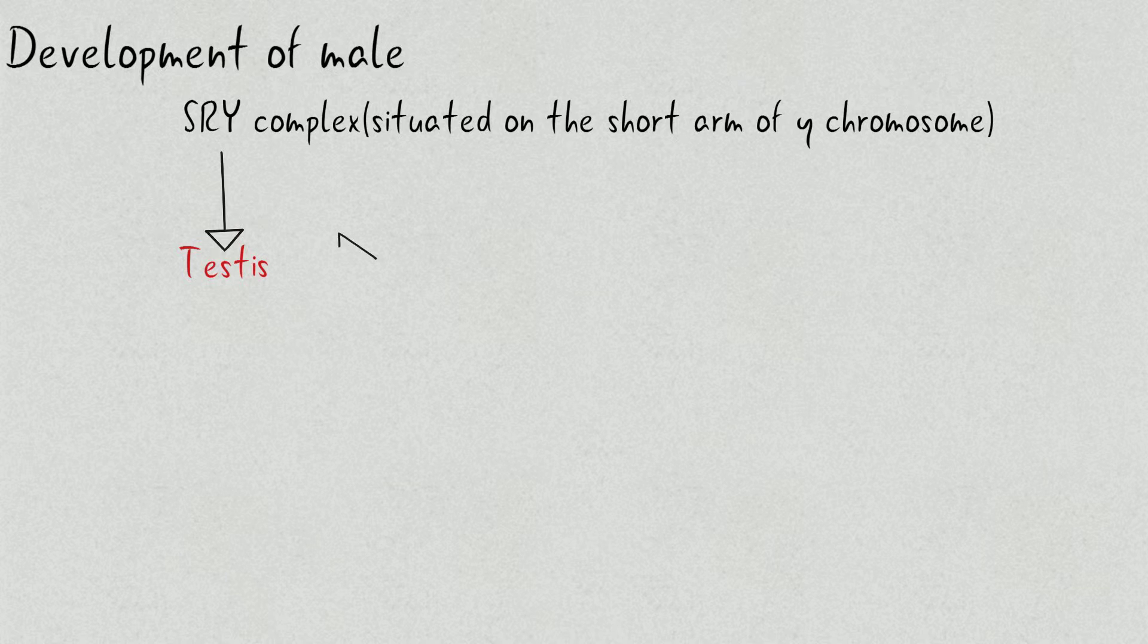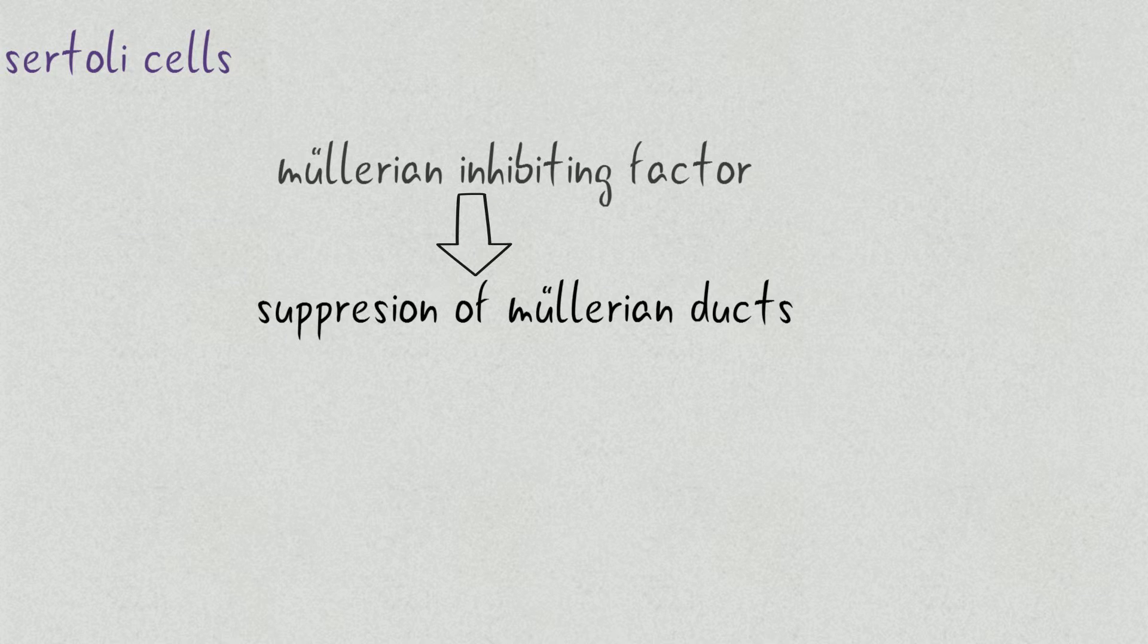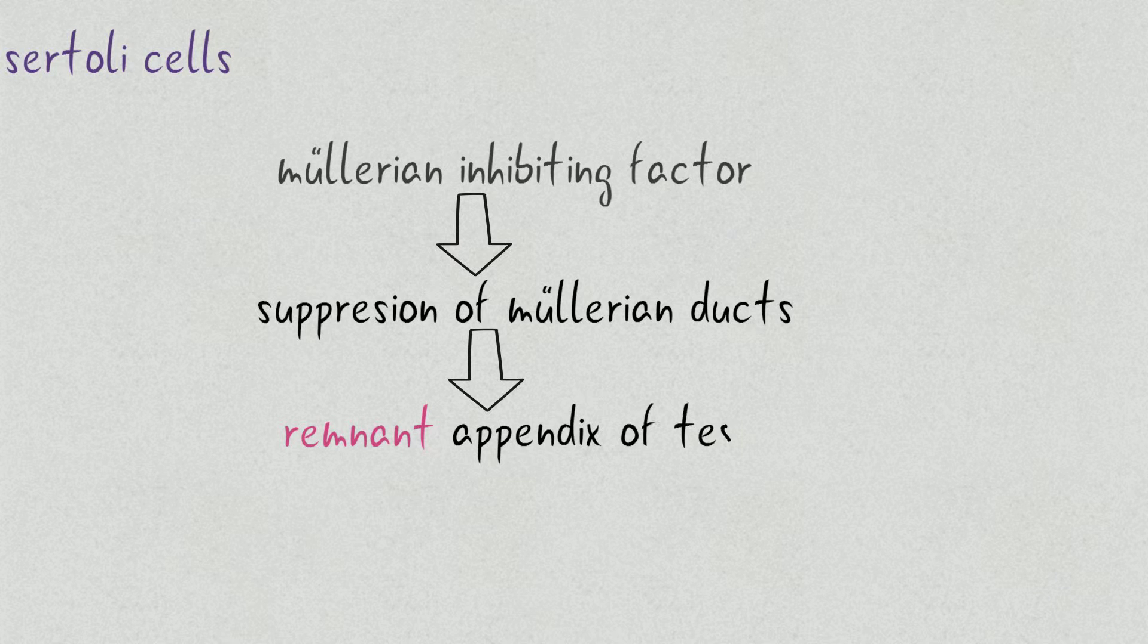Testes have two cell types: Sertoli cells and Leydig cells. Sertoli cells secrete Mullerian inhibiting factor, which suppresses the Mullerian duct, leading to formation of a remnant, the appendix of testis.